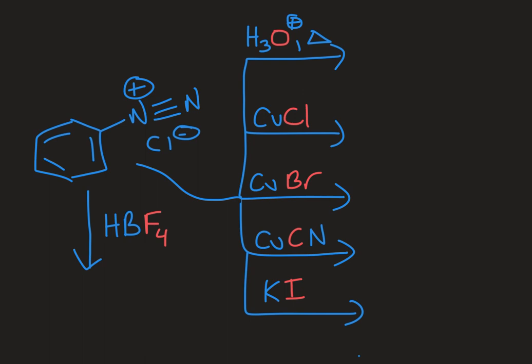So here I have a reaction scheme where I start with a diazonium salt and then I have a series of different reagents over the arrows to show all of the functionalizations that I can accomplish using this leaving group.